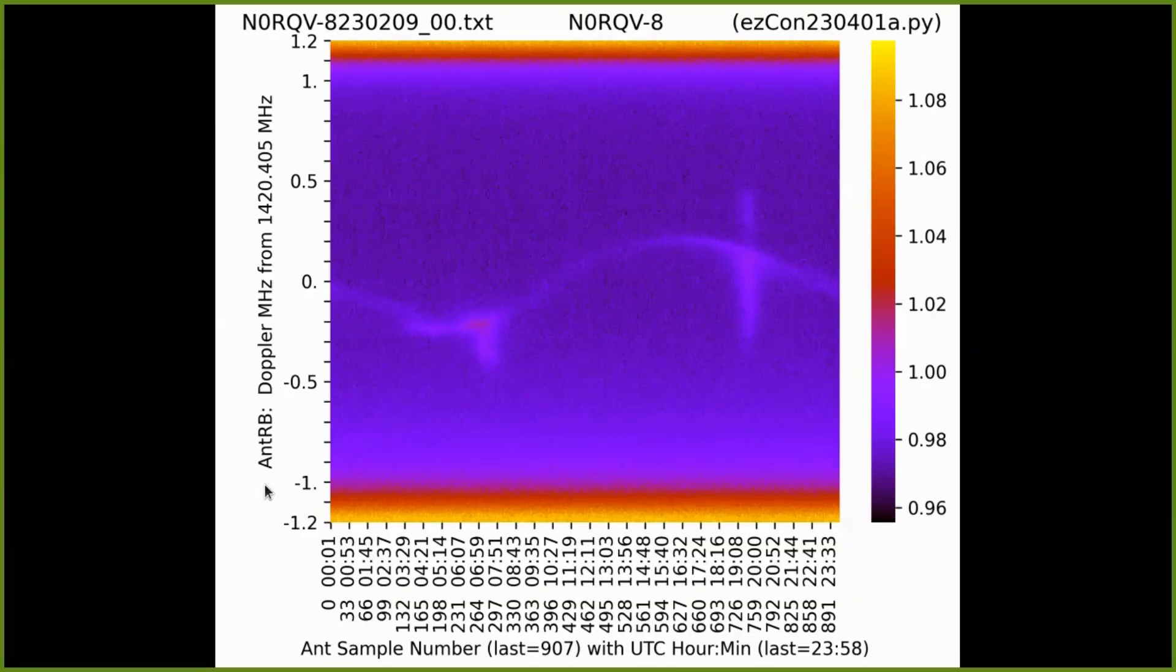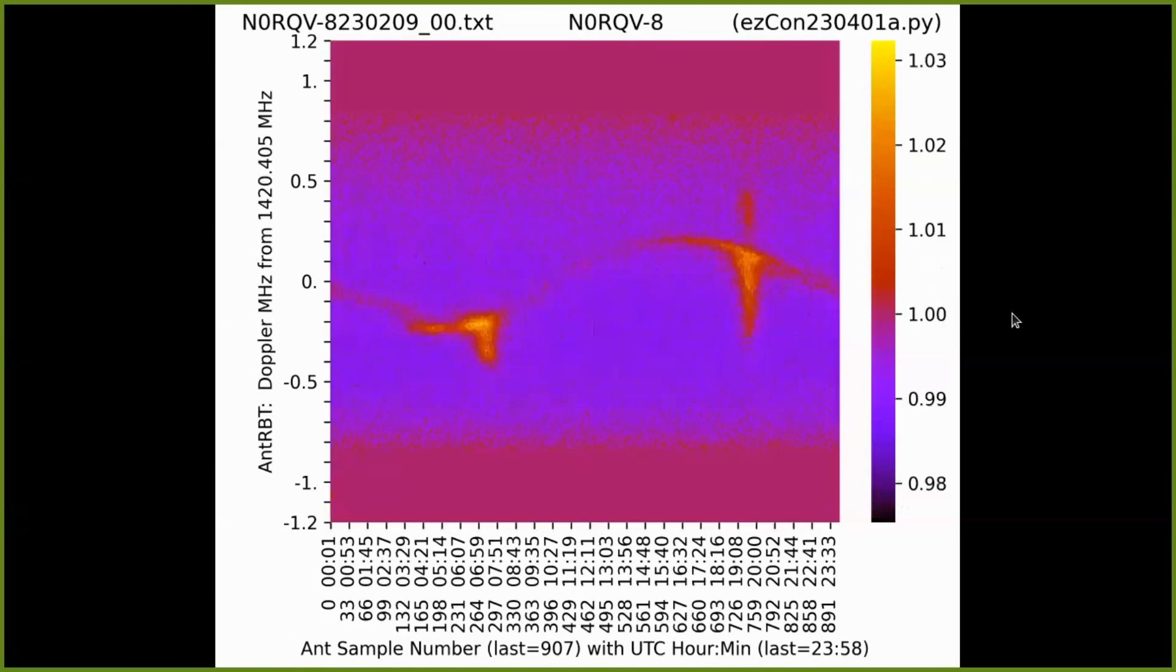Ant-R-B, we can trim off the low frequencies down here that aren't particularly necessary, and up here to see the important stuff in the middle where all the hydrogen information is, and come up with Ant-R-B-T for trim.